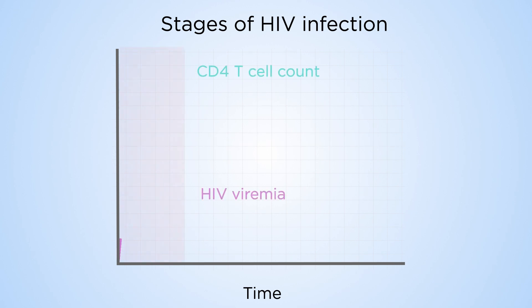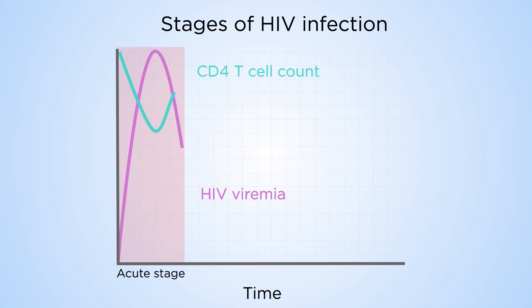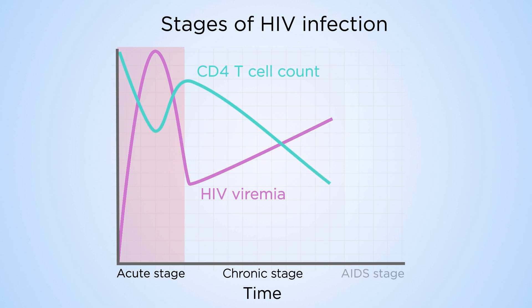Human immunodeficiency virus, HIV, infects immune cells — CD4 T-cells. Depletion of these cells was thought to lead to progression to AIDS.